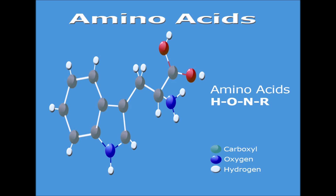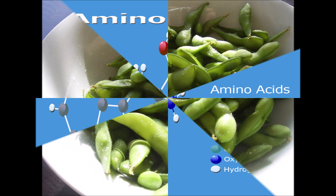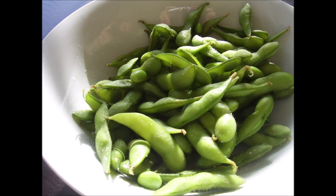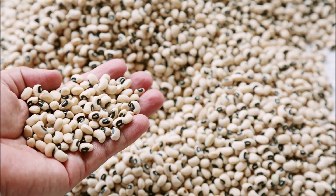Amino acids are the building blocks for proteins in plants and are a bio-organic nutritional product derived from vegetable sources, required for plant growth and development and for higher yields. They promote hormonal activity and induce the synthesis resulting in flowering and fruit setting.